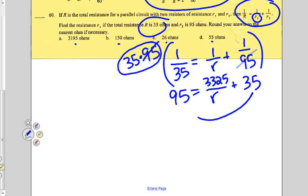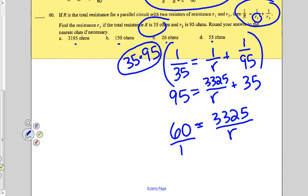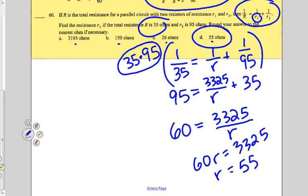Subtract 35 from both sides. Then what? 60R would equal 3325. Divide both sides by 60, and you get 55. So that resistor has to be 55 ohms, D.